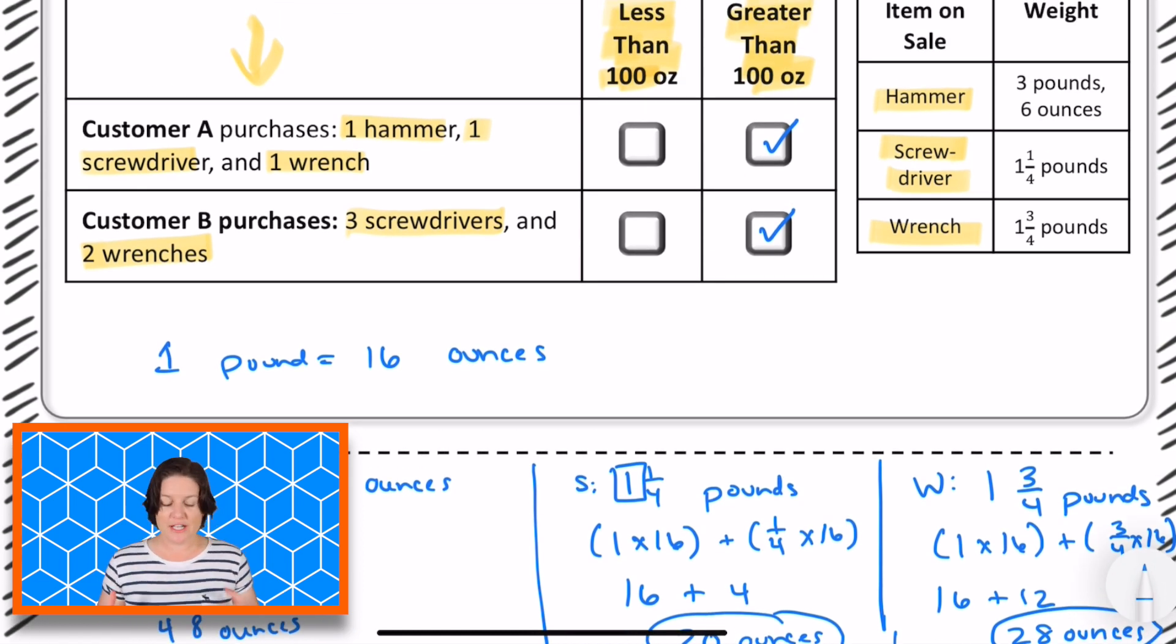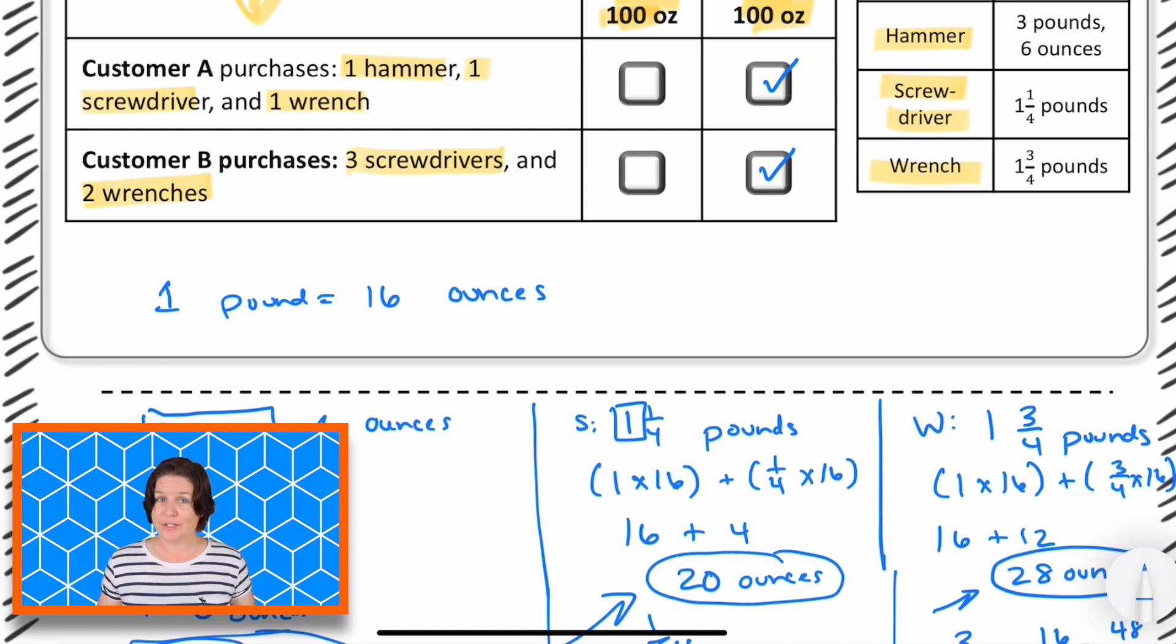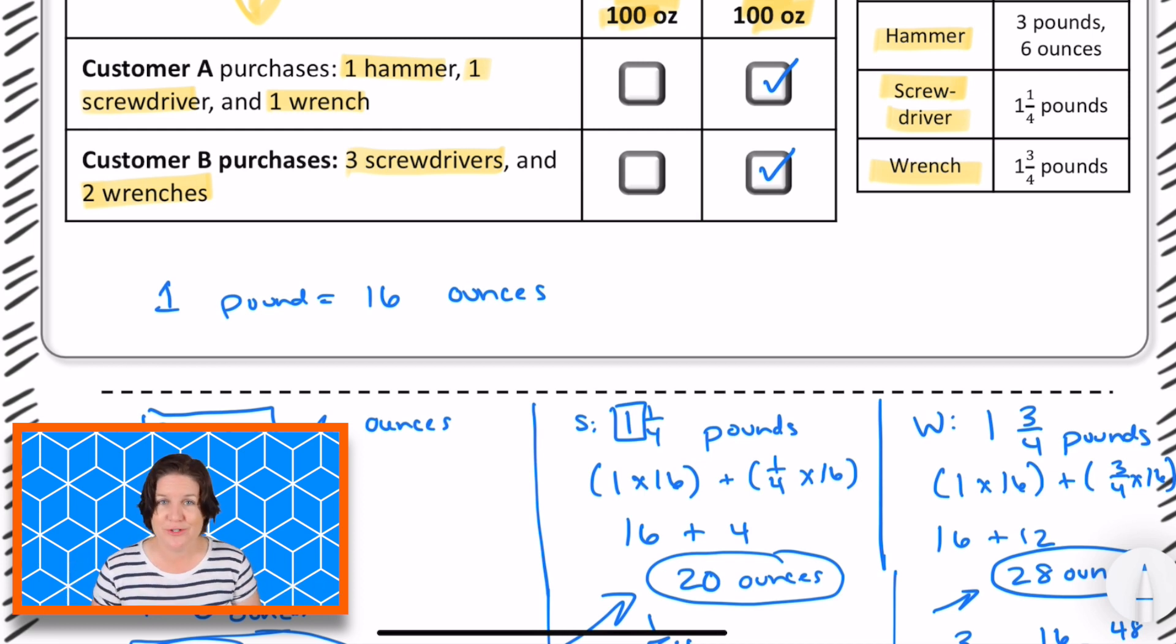So we got to be careful with matching item. It might be that there could be multiple in the same column. That's why it's important to write it out. Most times though, they try to vary it a little bit, but for this particular problem, both of them are greater than 100 ounces. So go ahead and pause the video to make any notes that you still need to make. And then when you are ready to continue, press play.